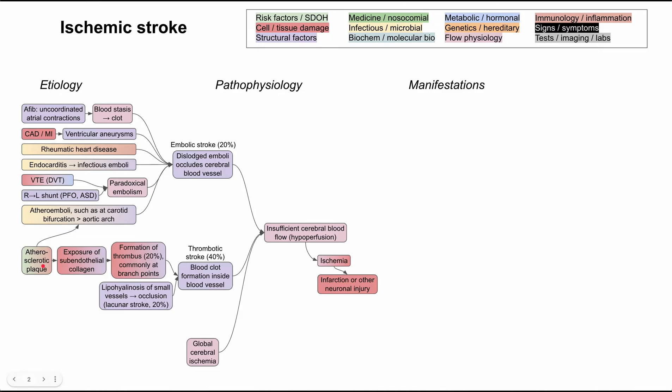And the process here is very similar to the vascular disease, the arterial disease that you have in other parts of the body. You have this plaque buildup that's made of cholesterol and you end up having an exposure of subendothelial collagen, which throws in a cascade of inflammatory processes as well as clotting processes, and the thrombus is formed. This also commonly happens at branch points, and that makes up about half of the thrombotic strokes.